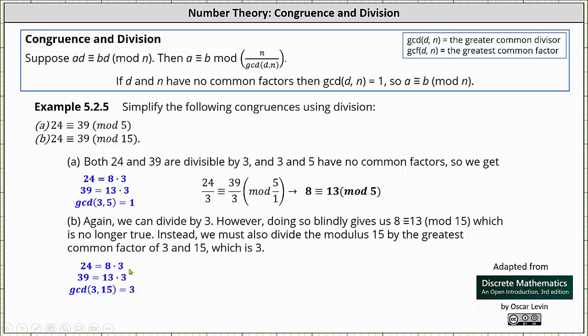This indicates to simplify the given congruence, we divide 24 by 3, 39 by 3, and we must also divide 15 by 3. This gives us a simplified congruence: 8 is congruent to 13 mod 5.